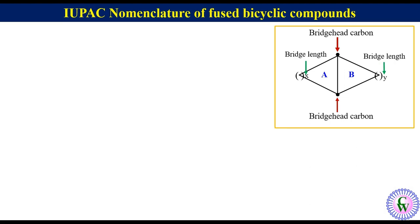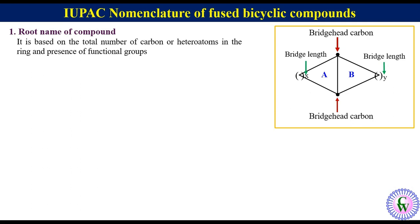These bicyclic compounds can be aliphatic or aromatic. In this video we will discuss the IUPAC naming of only aliphatic bicyclic compounds. We should keep the following points in mind for naming such compounds. The first point is the root name of the compound, which is based on the total number of carbon or hetero atoms in the ring and the presence of functional groups.